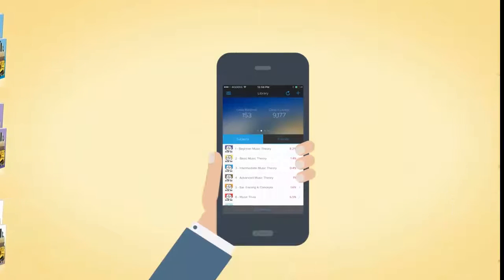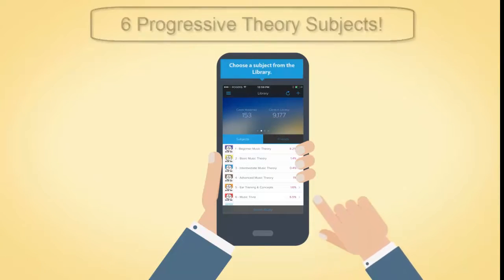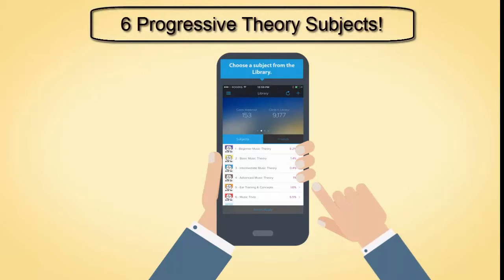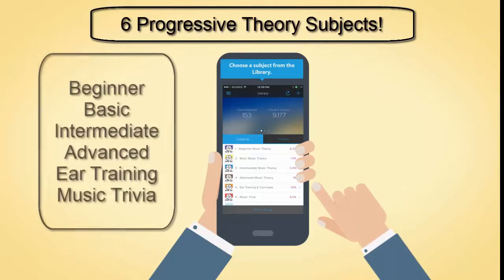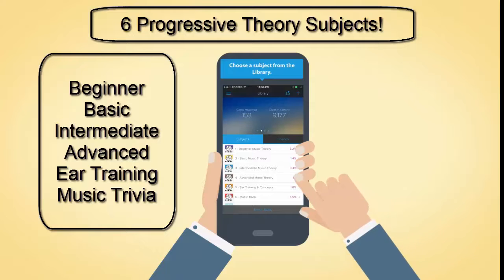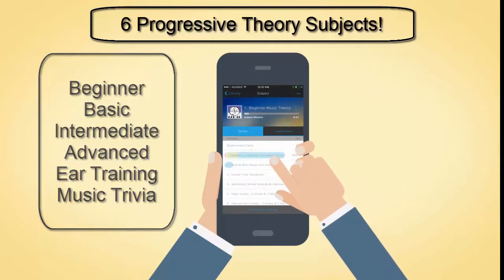To start learning, simply choose a subject from the library. There are six progressive theory subjects: Beginner, Basic, Intermediate, Advanced, Ear Training, and Concepts and Music Trivia.